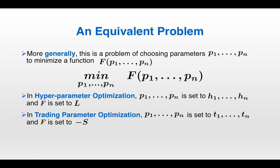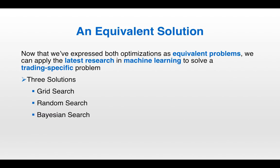By now you're probably realizing that these two optimization problems are very similar in nature. Indeed, we can express them as equivalent problems. Generally speaking, this is a problem of choosing parameters P1 to PN to minimize some non-explicit function F of P1 to PN. In hyperparameter optimization, P1 to PN is set to H1 to HN and F is set to L. In trading parameter optimization, P1 to PN is set to T1 to TN and F is set to negative S — because minimizing the negative of a function is equivalent to maximizing the function. Because we've expressed both optimizations as equivalent problems, they'll have an equivalent solution. That means we can apply the latest research in machine learning to solve a trading-specific problem. There's a lot more literature on machine learning than on trading parameter optimization, but we can repurpose that research to solve this trading parameter optimization problem.